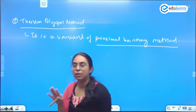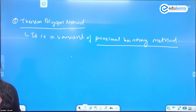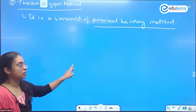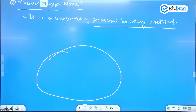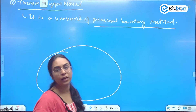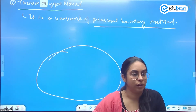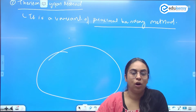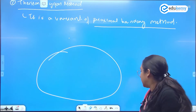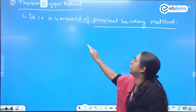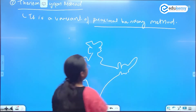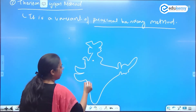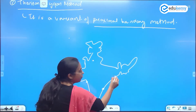The Thiessen polygon method has been used for demarcation of metropolitan regions. In this method, we first define a boundary — it can be a state boundary, a district boundary, or a national boundary. Taking India as an example, we have Delhi, Mumbai, Chennai, and Kolkata, and there is already a boundary that exists.